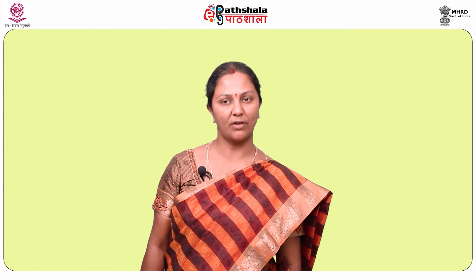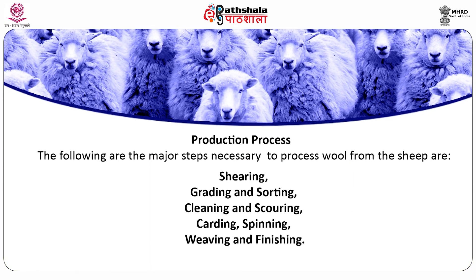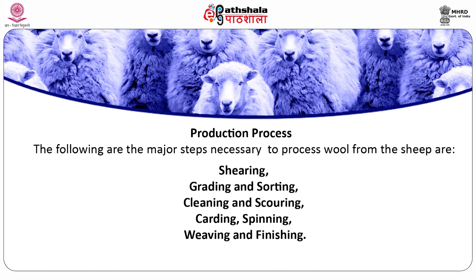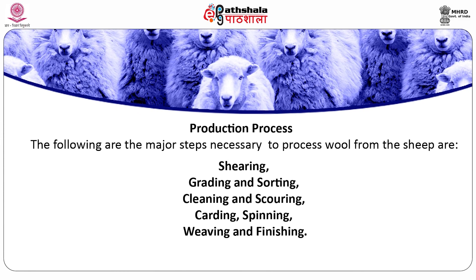Wool fiber is derived from sheep and was probably the first animal fiber to be made into cloth. The fibers consist of a protein called keratin covered by minute overlapping scales. The major steps to process wool from the sheep are: shearing, grading and sorting, cleaning and scouring, carding, spinning, weaving and finishing.